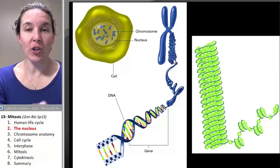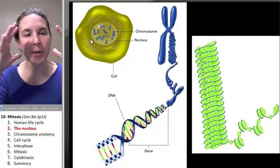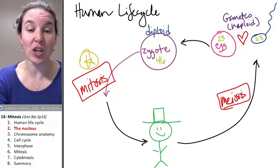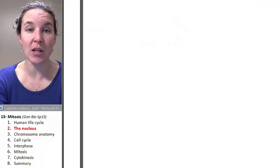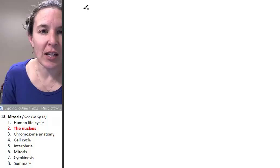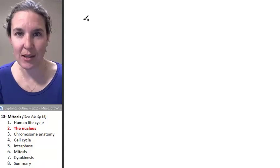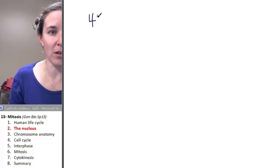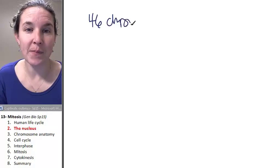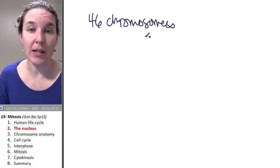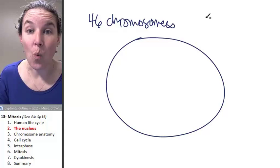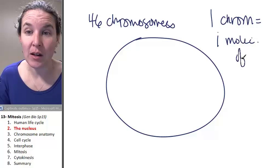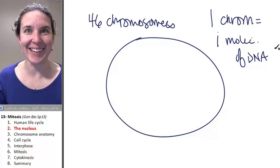So we'll talk about the structure of a chromosome in a second, but let's just look at the bigger picture. Inside the nucleus of a human being, we have 46 chromosomes. So I'm going to make a list here. I better stay in the screen, that could be a really interesting lecture right there. Okay, 46 chromosomes inside the nucleus. And the bottom line is that one chromosome equals one molecule of DNA.